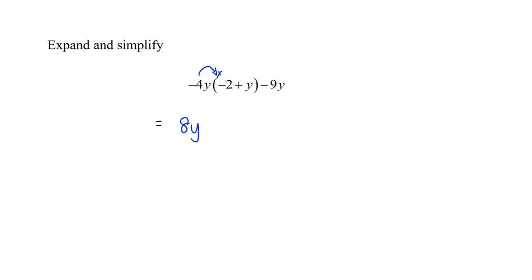Next, negative 4y multiplied by positive y gives negative 4y squared. There is still the negative 9y here.